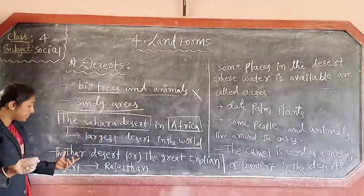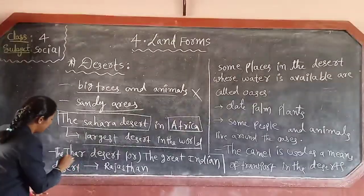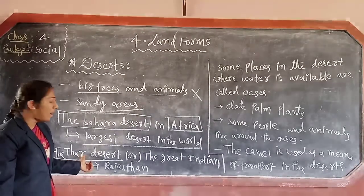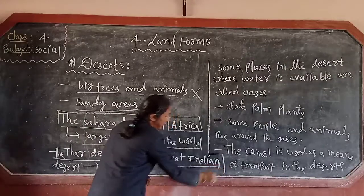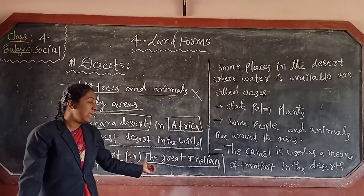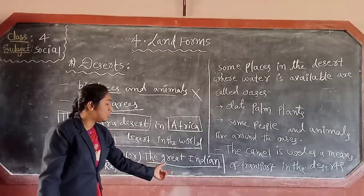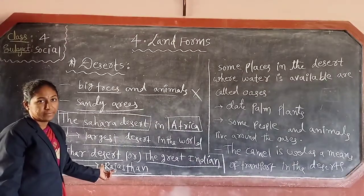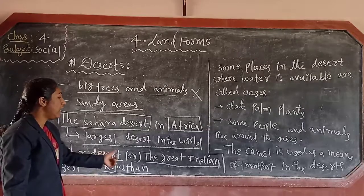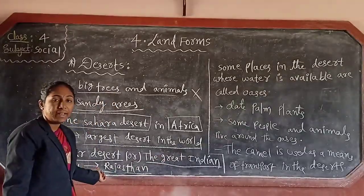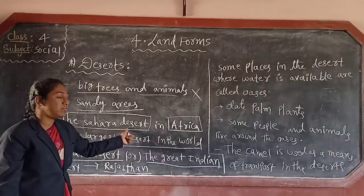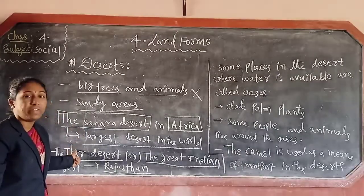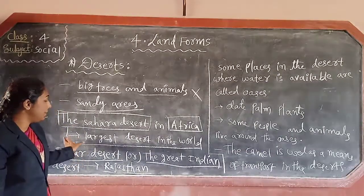In India we have a desert — that is the Thar Desert, spelled T-H-A-R. Another name for the Thar Desert is the Great Indian Desert, because it is situated in India, specifically in Rajasthan state. The Sahara Desert is situated in Africa; the Thar Desert is situated in Rajasthan. These are very important deserts of the world.